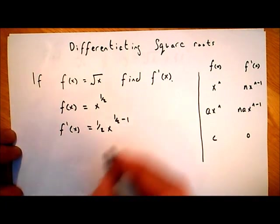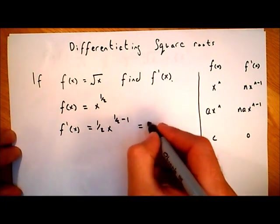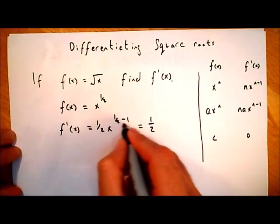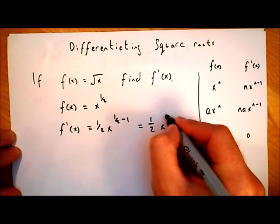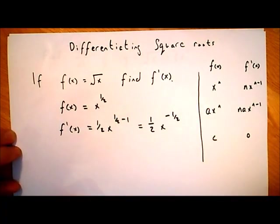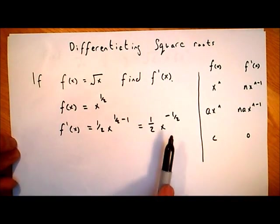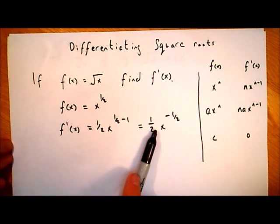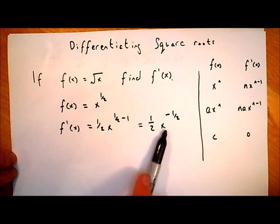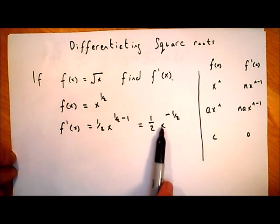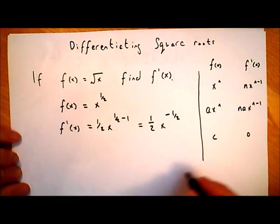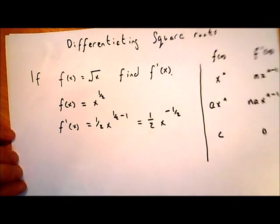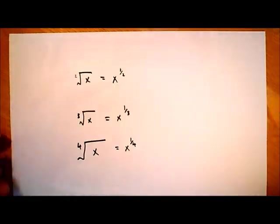It looks quite awkward, but it's not really. Let's simplify it. We have a half times x to the power of a half minus one. Well, a half minus one is minus a half, so we get x to the power of minus one over two. This is the answer — when f of x is the square root of x, when I differentiate I get this. We can tidy that up because x to the power of minus a half is not quite obvious what that means.